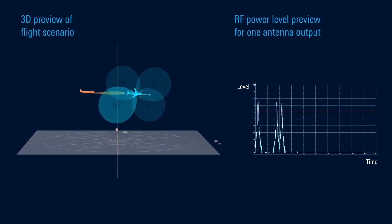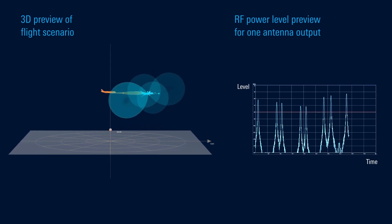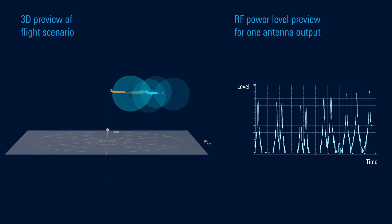The user can check the configured simulation and the resulting power level variation in a preview. The peaks in the level trace result from the raster scan. The spacing of the peaks and the received power levels change with the flight path.